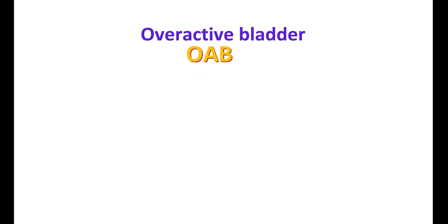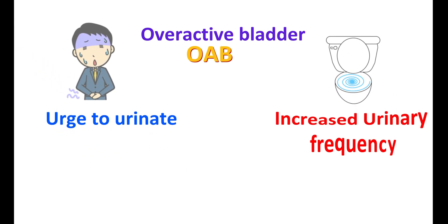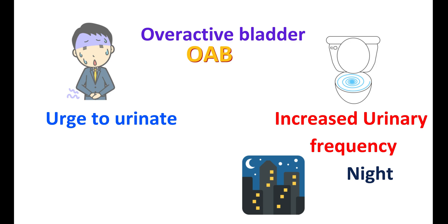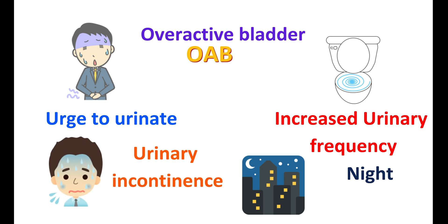Overactive bladder, also commonly known as OAB, is a condition of excessive stimulation of the bladder that results in an urge to urinate and increased urinary frequency, especially at night. In some people, leaking urine may be observed as a result of urinary incontinence.